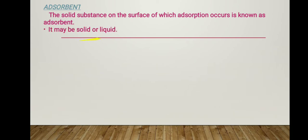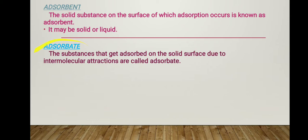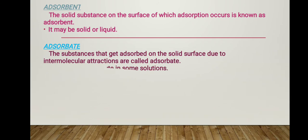The adsorbent may be solid or liquid. The next term is adsorbate — the substance that gets adsorbed on the solid surface due to intermolecular attraction is called the adsorbate. The adsorbent provides the surface for adsorption, while the adsorbate is the molecules that accumulate over the surface of the adsorbent. In the chalk-and-duster example, the dust particles are the adsorbate and the duster is the adsorbent. The adsorbate may be a gas or a solute in solution.